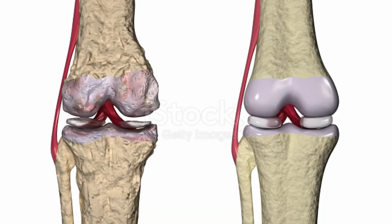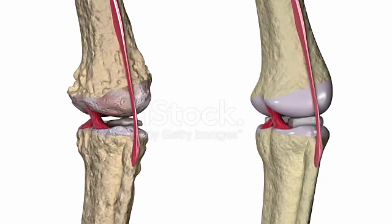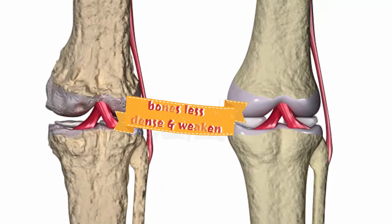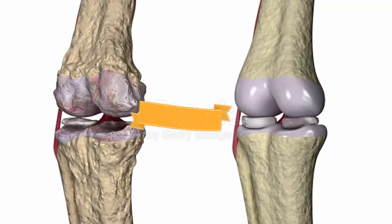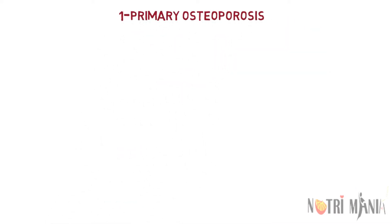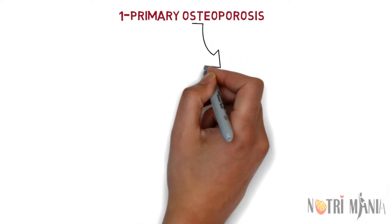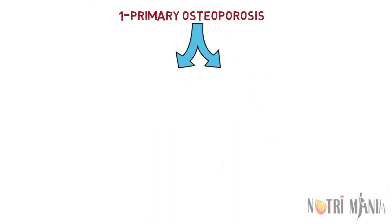Osteoporotic bones have lost density or mass and contain abnormal tissue structures. As bones become less dense, they weaken and are more likely to break. If you are 50 or older and have a broken bone, ask your doctor or healthcare provider about a bone density test. Two categories of osteoporosis have been identified: primary osteoporosis and secondary osteoporosis.